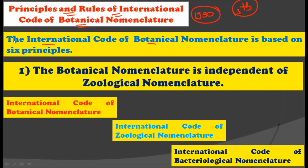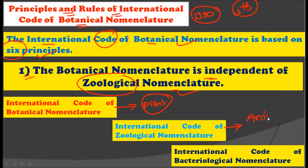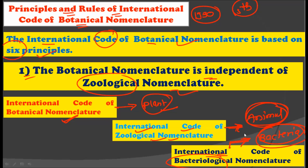The international code of botanical nomenclature is based on six principles. The first principle is that botanical nomenclature is independent of zoological nomenclature. In botanical nomenclature we name plants scientifically, while in zoological nomenclature we name animals, and there is also an international code of bacteriological nomenclature for naming bacteria. So botanical nomenclature is totally independent from zoological nomenclature.